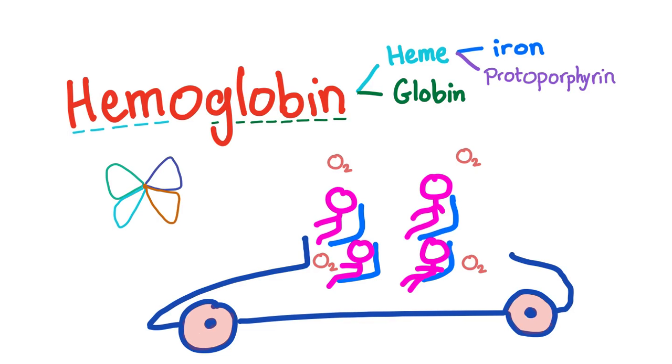But first, before discussing thalassemia, we need to know about hemoglobin. We've said before that hemoglobin consists of heme and globin, and the heme consists of iron and protoporphyrin.